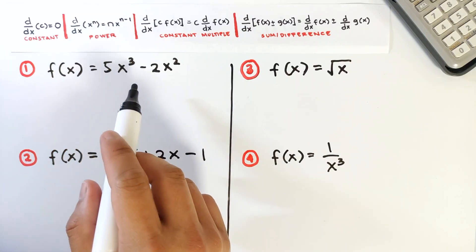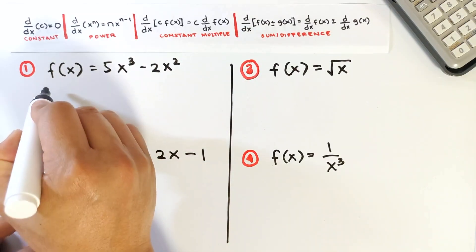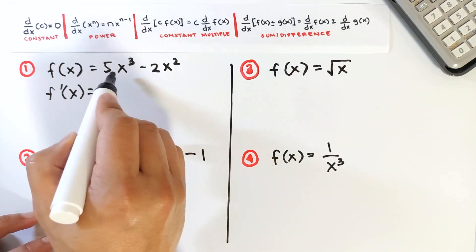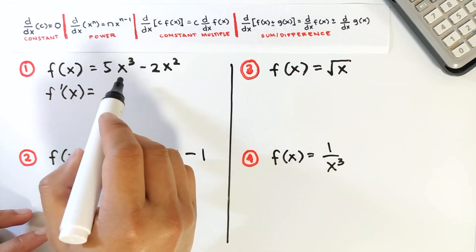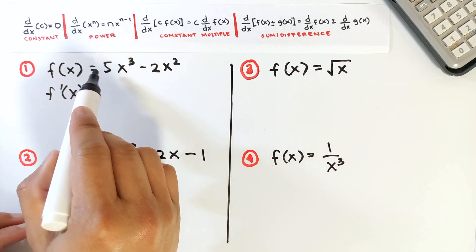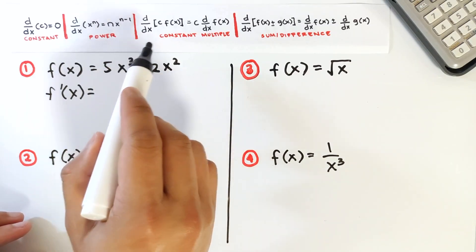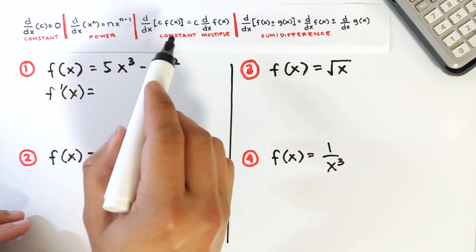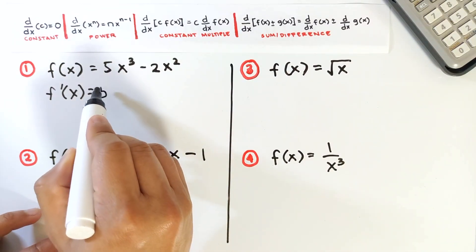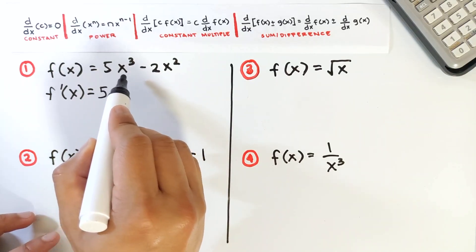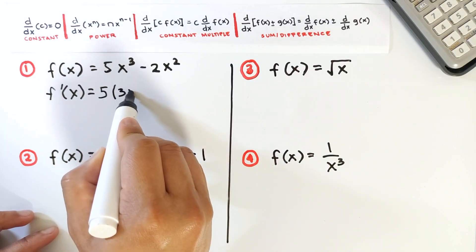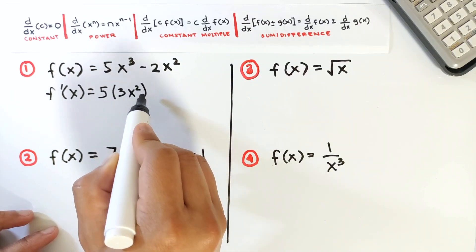Given number 1: f(x) = 5x cubed minus 2x squared. The derivative f'(x) is found using the derivative of a difference — we simply get the derivative of the first term and then subtract the derivative of the second term. For the first term, applying the constant multiple rule, we copy the constant 5 and differentiate x cubed. Using the power rule, the derivative of x cubed is 3x squared. Then we have minus.